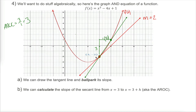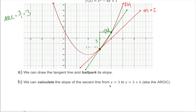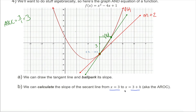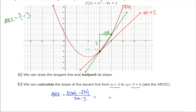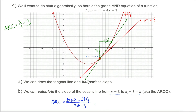We're so good with secant lines that we can use x values like 3 and 3 plus h. To find the slope of the secant line from x equals 3 to x equals 3 plus h, we call these x1 and x2 respectively, take f(x2) minus f(x1) and divide by x2 minus x1. This gives us some expression involving h that tells us the average rate of change between two points where one is the initial red dot and the other is some arbitrary dot on the curve.